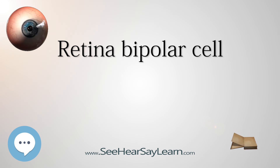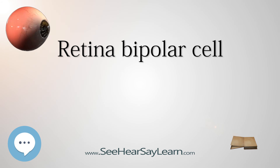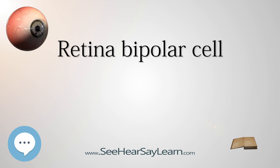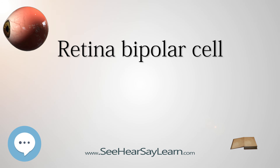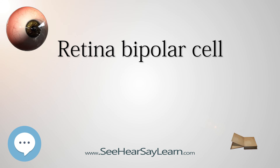Signal transmission. Bipolar cells effectively transfer information from rods and cones to ganglion cells. The horizontal cells and the amacrine cells complicate matters somewhat. The horizontal cells introduce lateral inhibition to the dendrites and give rise to the center-surround inhibition which is apparent in retinal receptive fields. The amacrine cells also introduce lateral inhibition to the axon terminal, serving various visual functions including efficient signal transduction with high signal-to-noise ratio.